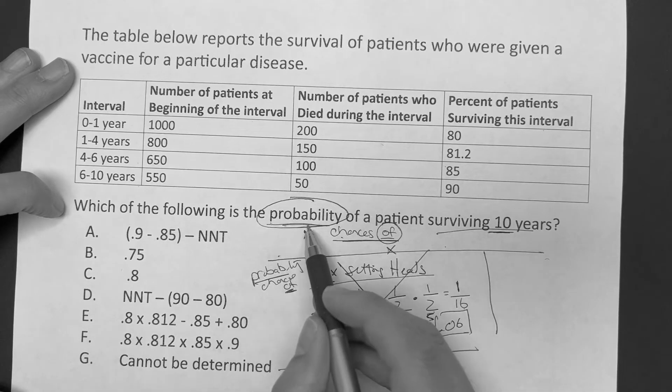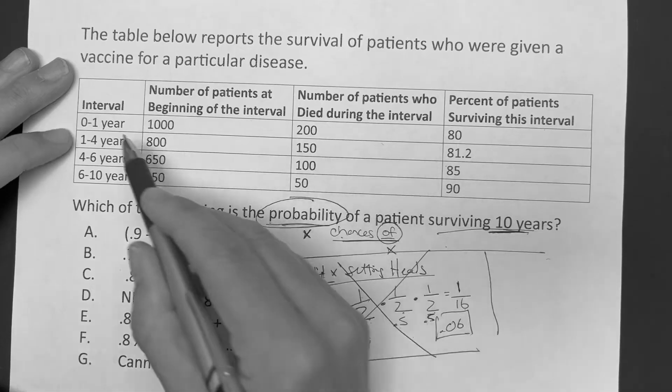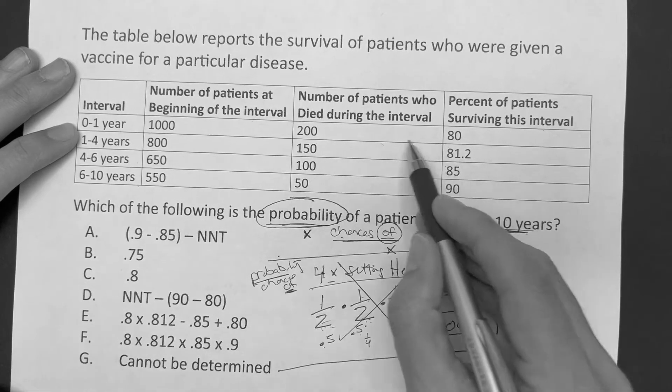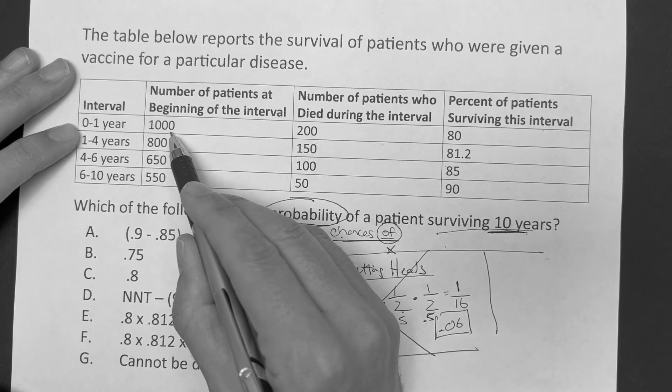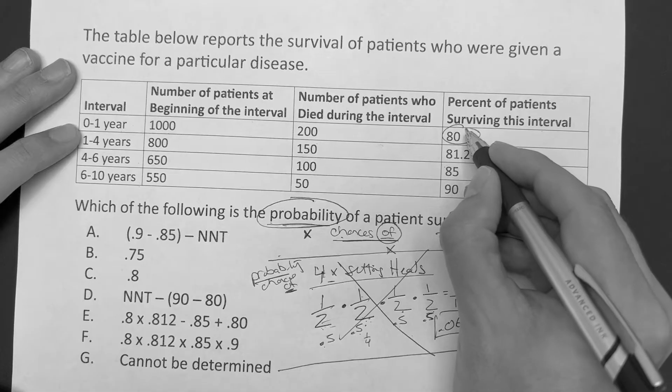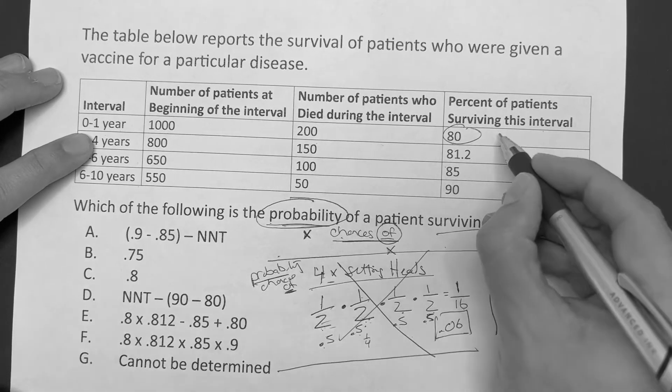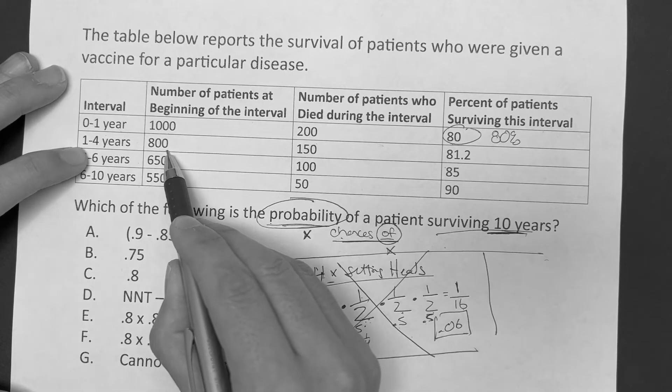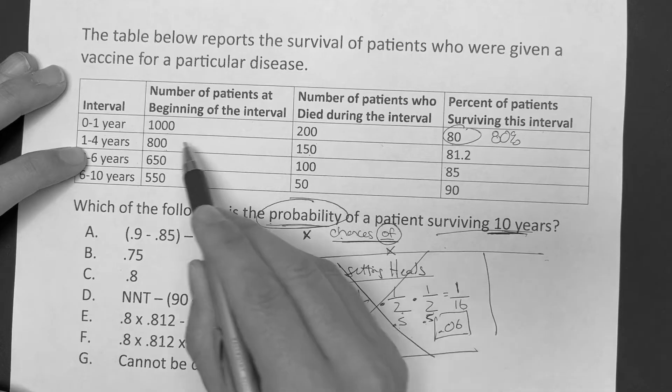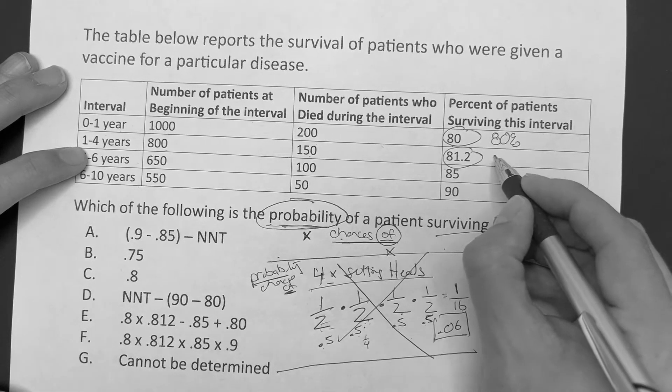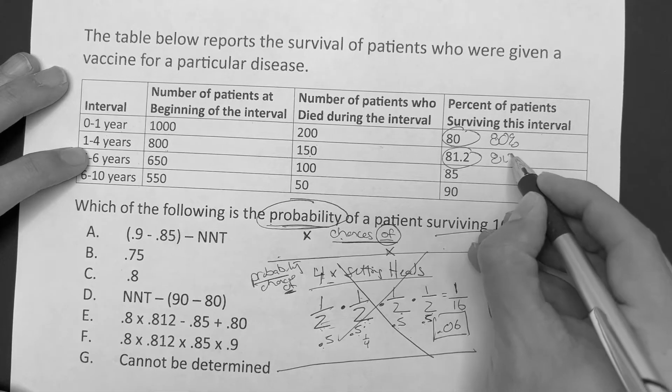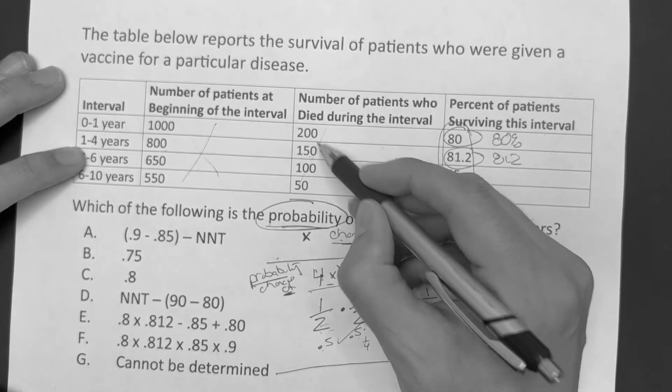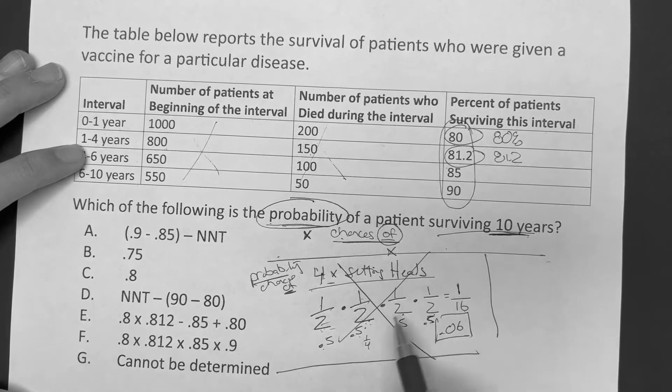The question says which of the following is the probability of a patient surviving 10 years? When we look at this, 0 to 1 years, it talks about all these patients, how many that were there, the number who died. So how many survived, 800. Well, 800 out of 1,000 is going to be 80% survived. So the chances during this first interval that you're going to survive are 80%. In year two, between years one and four, you started with 800 people, 150 died, so 650 remains. 650 out of 800 is 81.2. So I can start to see where they got these numbers from.